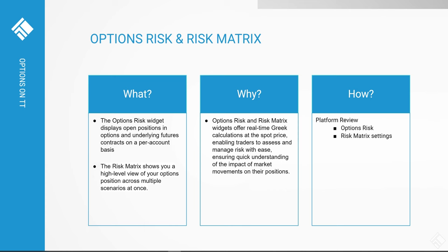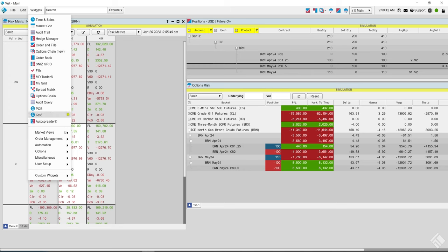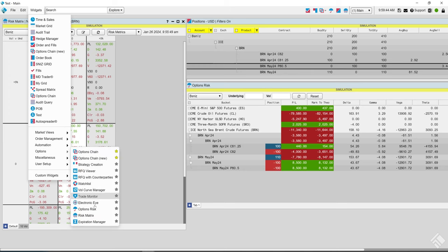The Options Risk widget displays your open position in options contracts and underlying futures contracts for a product on a per-account basis. The widget shows the current position in Greek calculations at spot price. It also allows the position to be viewed for user-defined scenarios based on adjustments to the underlying instrument price or adjustment to the global volatility.